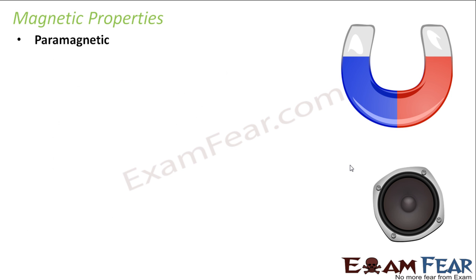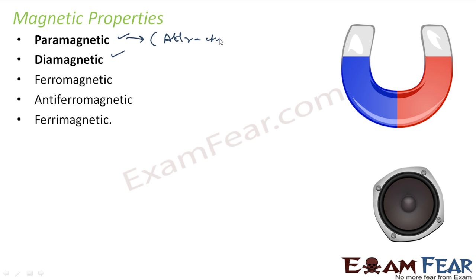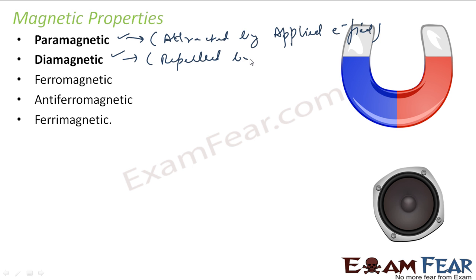The types of magnets we have are: paramagnetic, diamagnetic, ferromagnetic, anti-ferromagnetic, and ferrimagnetic. But we will be discussing more about the paramagnetic and diamagnetic. In diamagnetic, the substance is repelled by the applied magnetic field, and paramagnetic is attracted by the applied magnetic field.